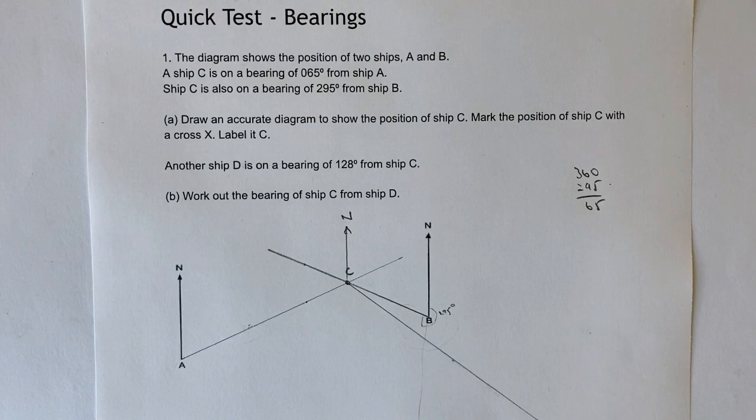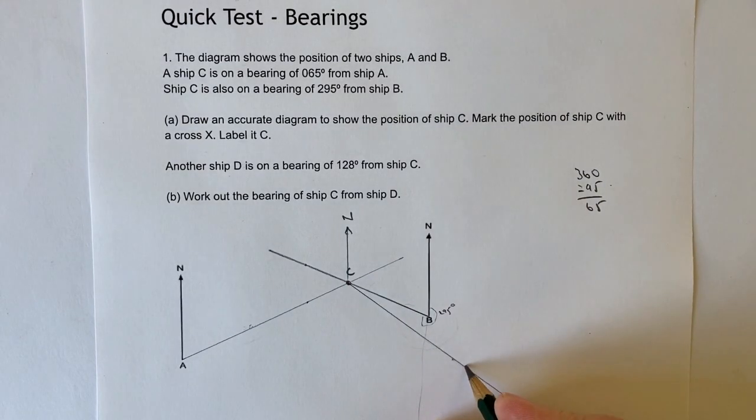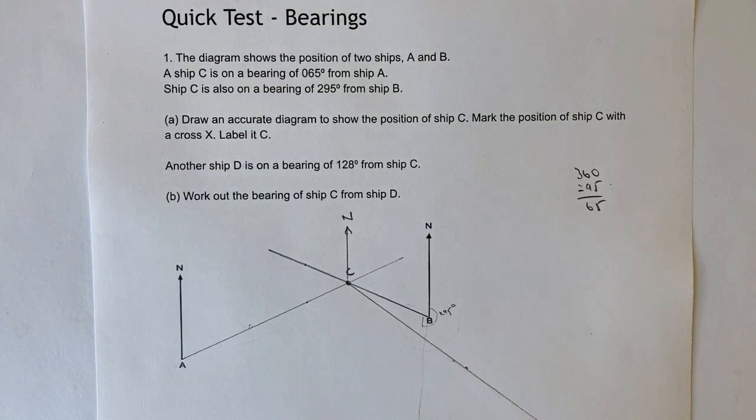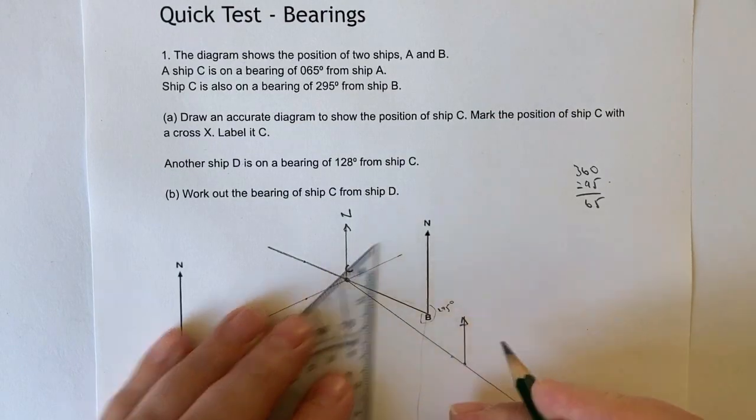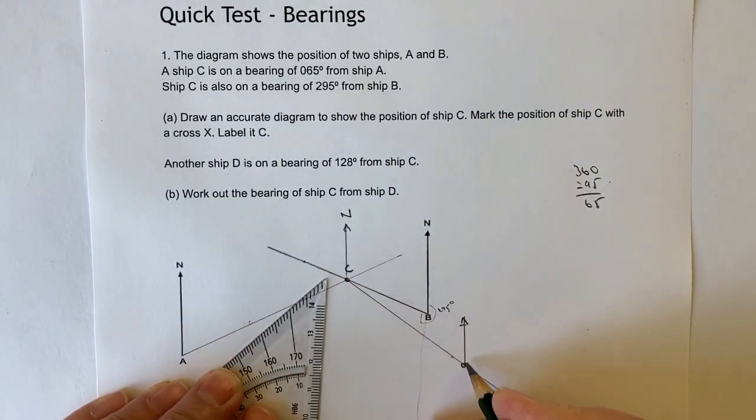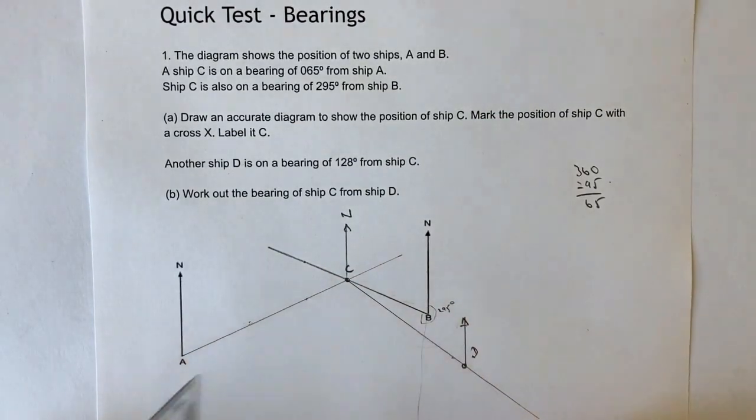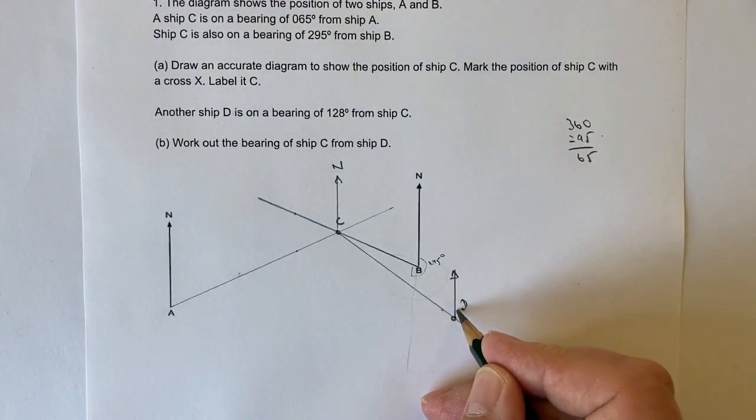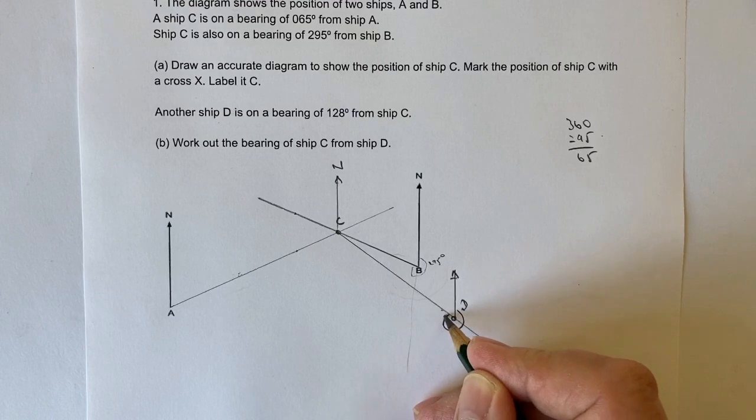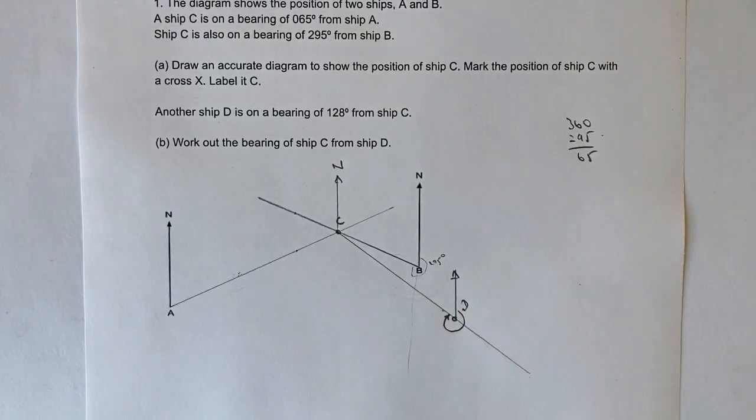Now this particular case doesn't really matter how far it is. But we're being asked to work out the bearing of ship C from ship D. So let's say for instance, if we put ship D here. So what we're being asked to do if this is the northerly point, and this is ship D, basically we're being asked to calculate this angle north clockwise.